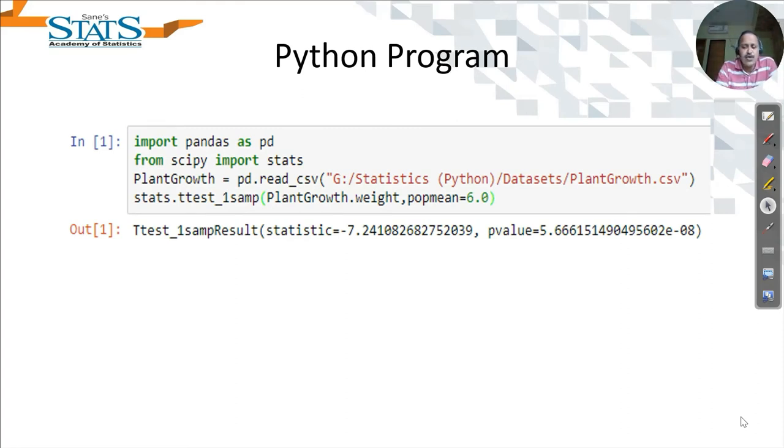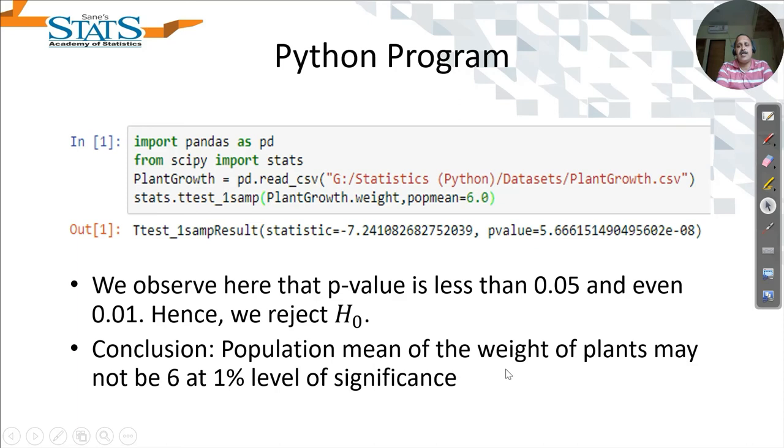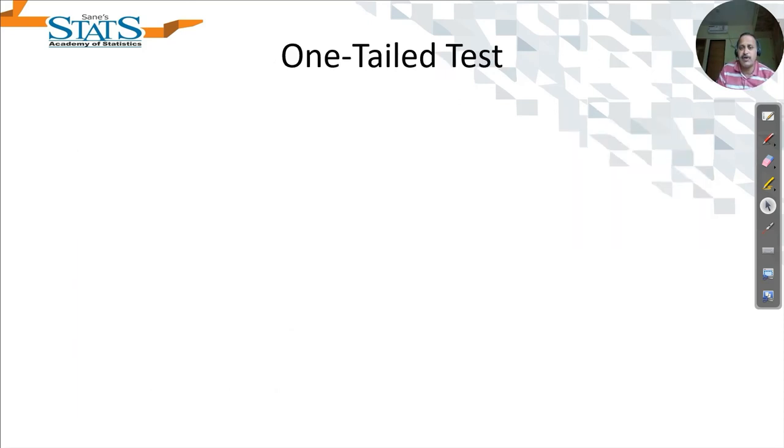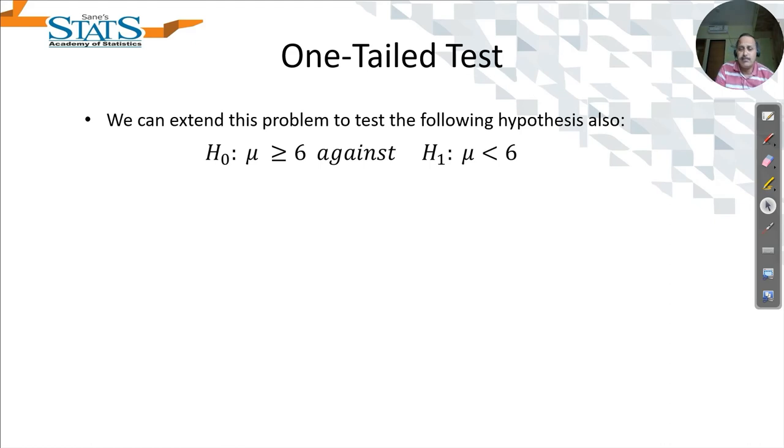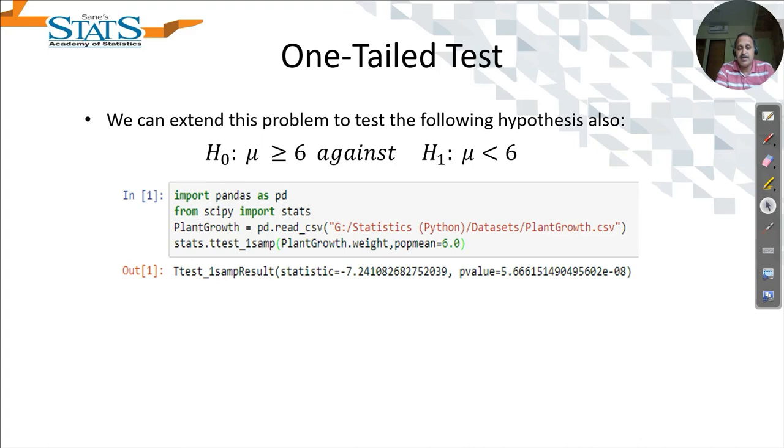Considering this result, you may also think of having a one-tailed hypothesis. Now we can have a one-tailed hypothesis in the following way: maybe mu is greater than or equal to 6 versus mu is less than 6. This is a lower-tailed test which we are performing. The ttest_1samp function doesn't have a direct option for this.